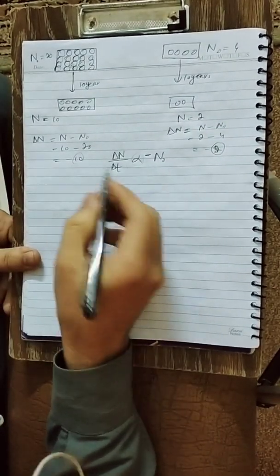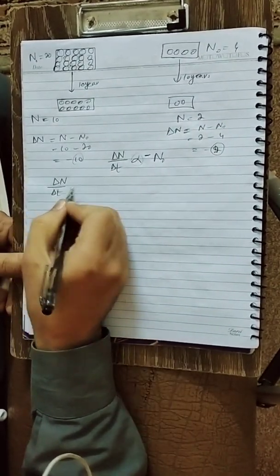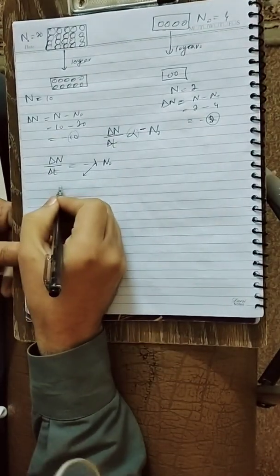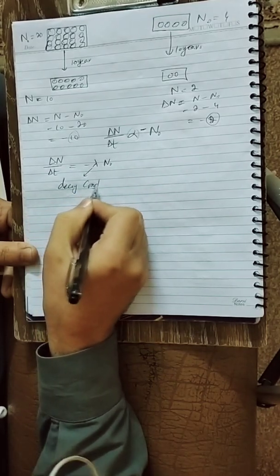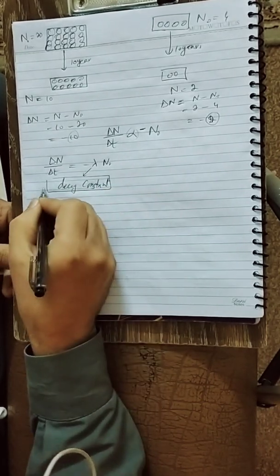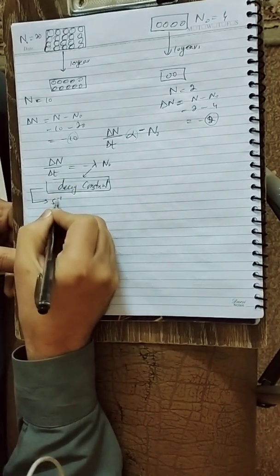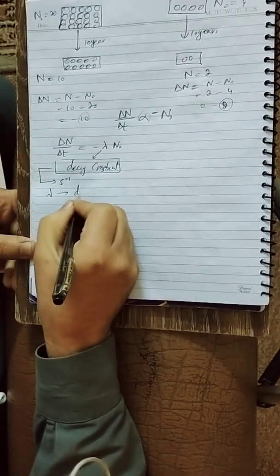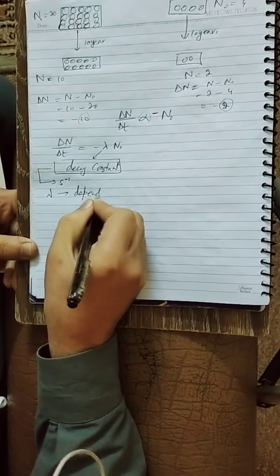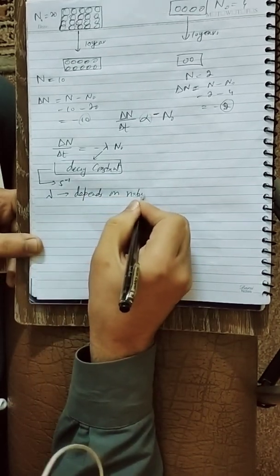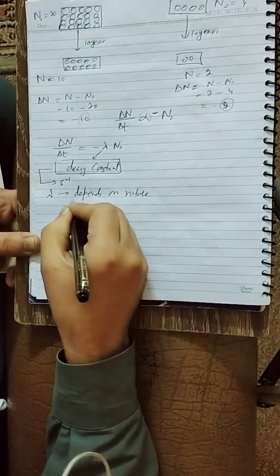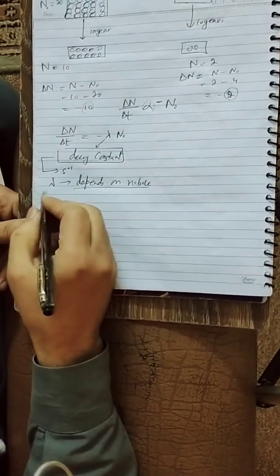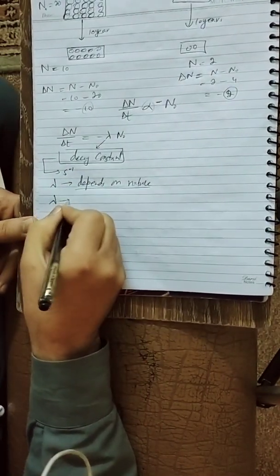Removing the proportionality sign, we place a constant called lambda (λ), which is the decay constant or the probability of decay. The unit of lambda is per second. Lambda depends on the nature of the material — it does not depend on temperature. Lambda explains the stability of the material.